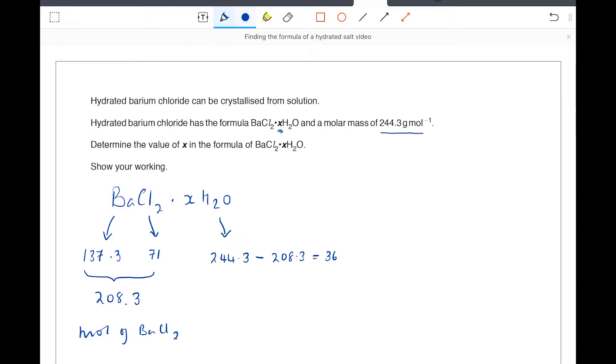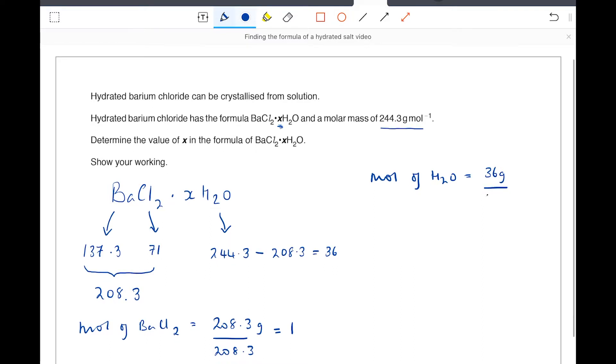How many moles? Well, I know that the moles of barium chloride is one, because I've got 208.3 grams and if I divide it by the molar mass, which I've just worked out to be 208.3, equals one. Moles of water we can work out in exactly the same way. The mass is 36 grams, the molar mass of water is 18, so I know that I've got two moles of water.